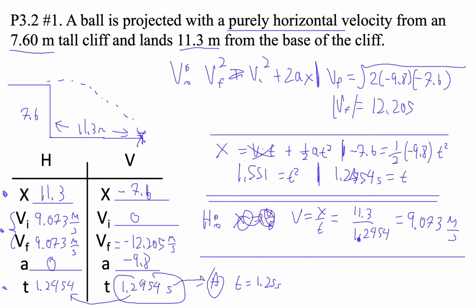What purely horizontal velocity was it projected from the top of the cliff? B. That's going to be this guy. And I'm going to say 9.07. Did we get that right? We got that right.